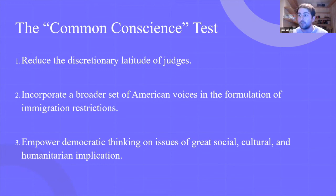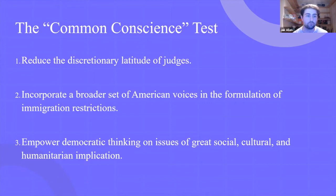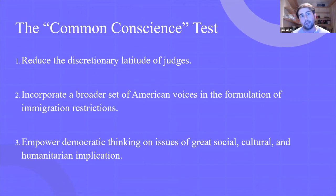The common conscience test had three aims: first, to reduce the discretionary latitude of judges; second, to incorporate a broader set of American voices in formulating immigration restrictions; and third, to empower democratic thinking on issues with great social, cultural, and humanitarian implications. The idea was that by asking ordinary people — not through a direct referendum, but by strengthening the voices of American society — citizens would think more critically about morality, the treatment of immigrants, and how their views would be represented at the ballot box.